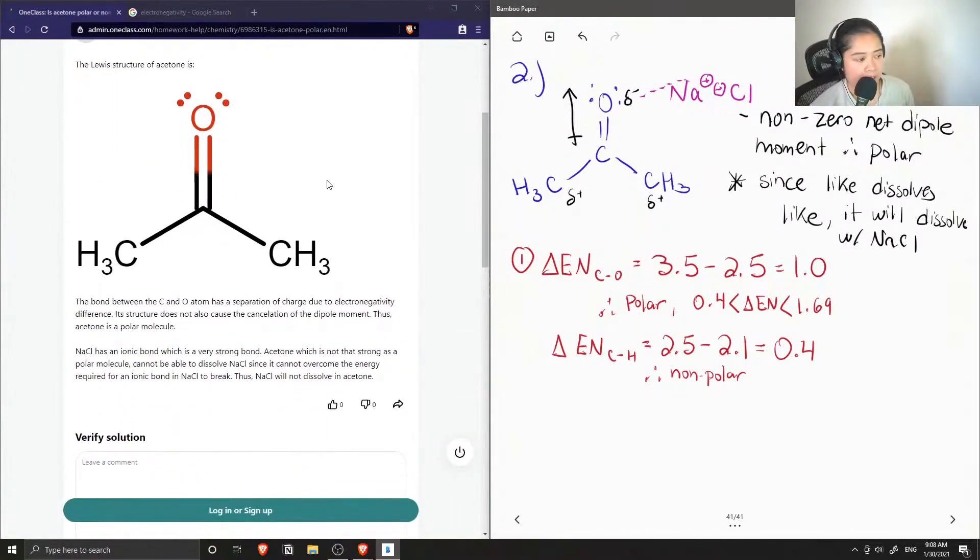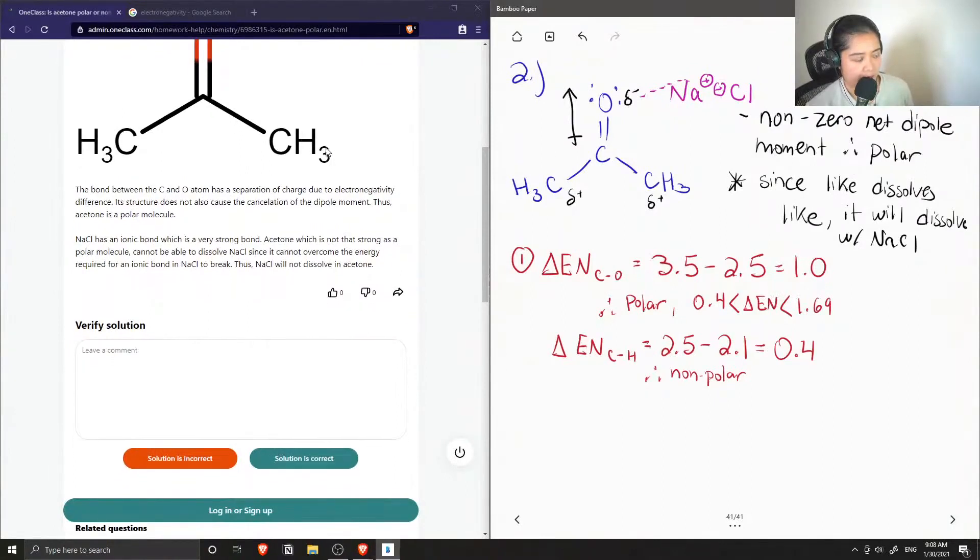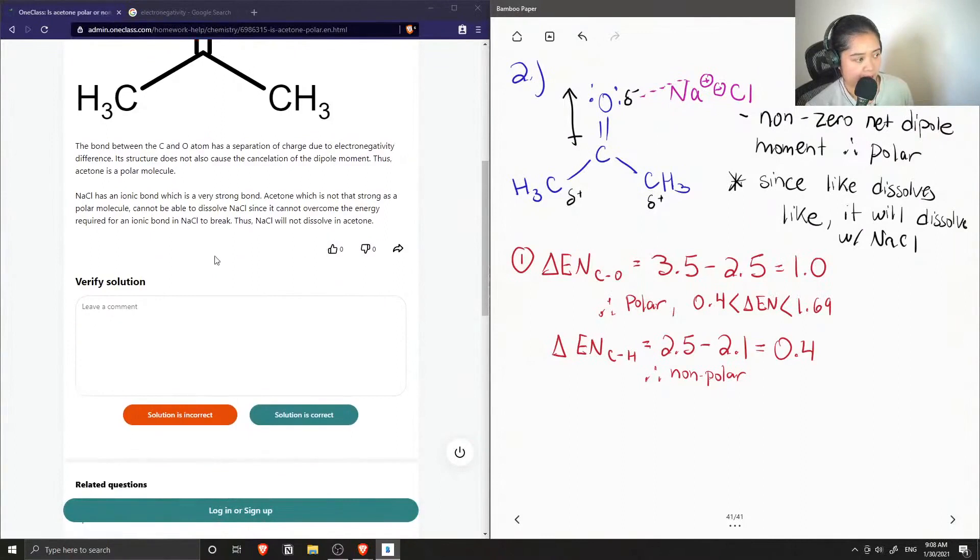The junior tutor said that the bond between the carbon and oxygen has a separation of charge due to electronegativity difference. Its structure does not cause the cancellation of the dipole moment. Thus, acetone is a polar molecule. Sodium chloride has an ionic bond, which is a very strong bond. Acetone, which is not that strong as a polar molecule, cannot be able to dissolve sodium chloride, since it cannot overcome the energy required for an ionic bond to break.